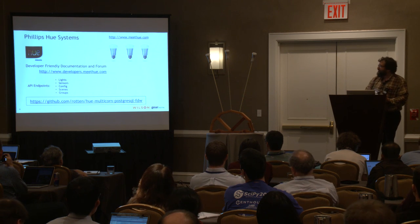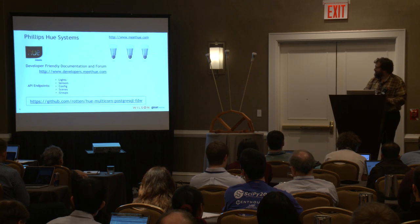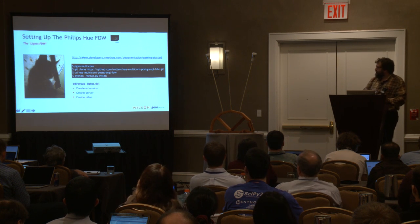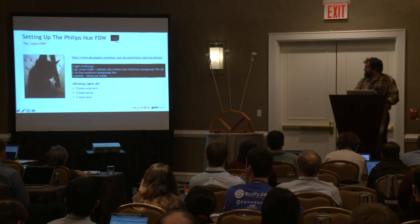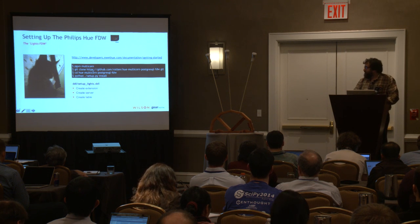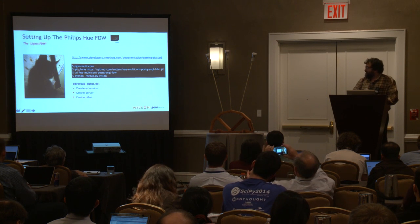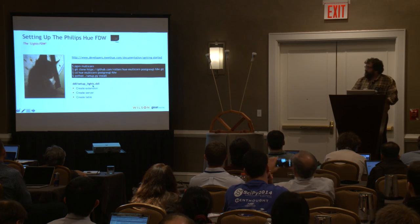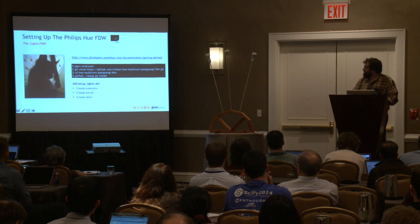The readme is still a bit sparse, but you can refer to these slides until I finish it. When setting up the Philips Hue lights, I use PGXN to install the Multicorn extension in one command. Then clone the multicorn-postgres-hue repository from my repo, cd into it, run setup.py install, and it's there. The next step is to run some DDL.